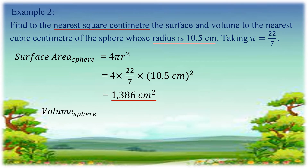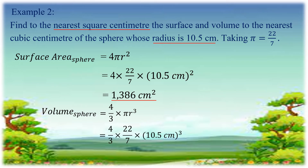Now let us find the volume of the sphere, which equals 4/3 times pi times R cubed. Substituting the values, we get 4/3 times 22/7 times 10.5 to the third power. Simplifying further, we get 4851 cubic centimeters. That is the volume of the sphere.